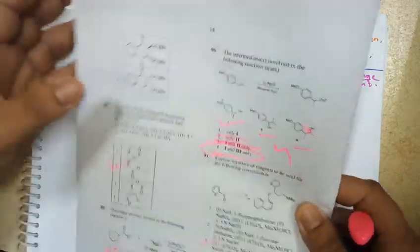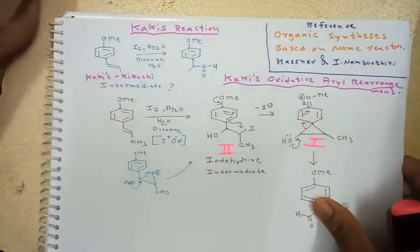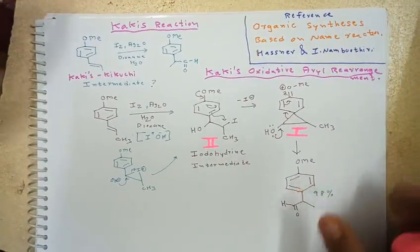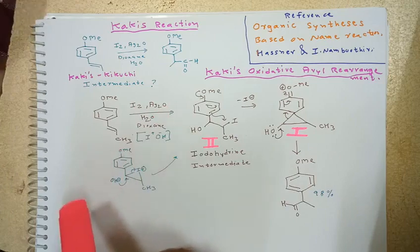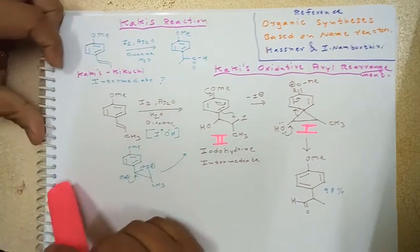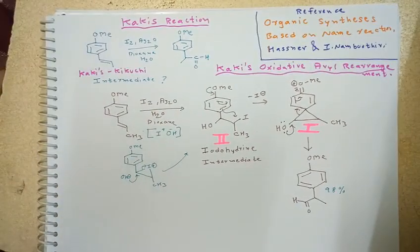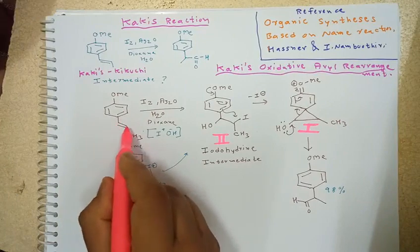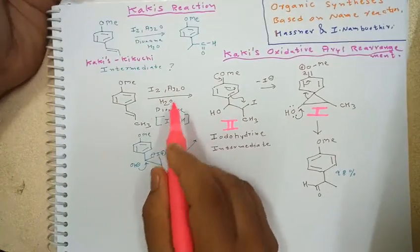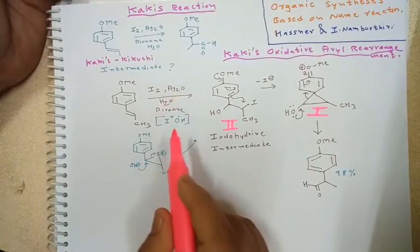Basically, this reaction involves iodine and silver oxide as reagents. We have our transalkin here, as you can see. The first step is when iodine and silver oxide get mixed, it generates iodine hydrine.